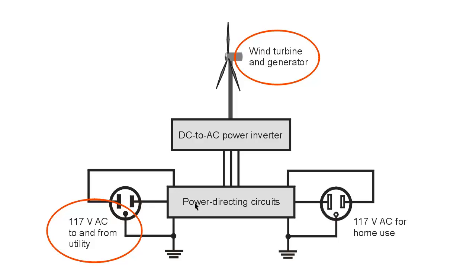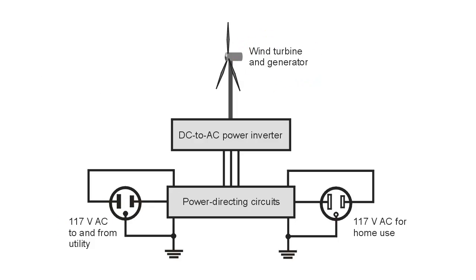The power directing circuits control all of that and give you the amount of power that you need pretty much regardless of the situation. In a specific case where you are using less power than the wind turbine is actually producing, this power directing circuit in some states can sell the excess back to the utility and help to offset your monthly electric bill.